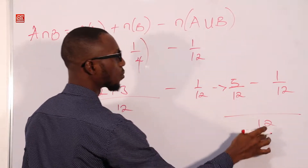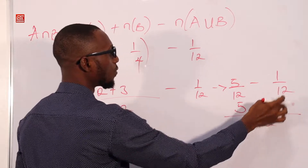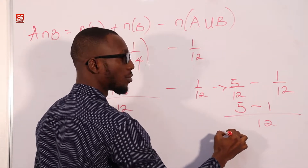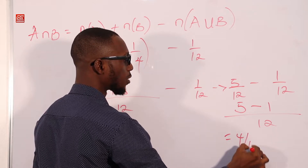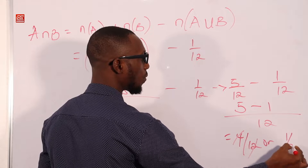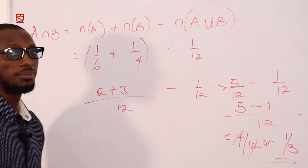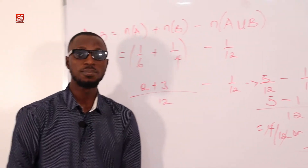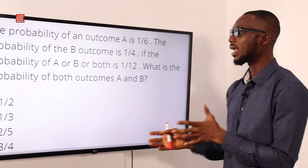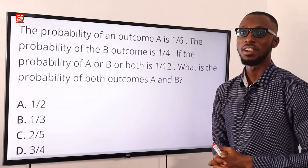LCM is 12. 12 in 12 is 1, times 5 gives 5. Minus: 12 in 12 is 1, times 1 gives 1. So this gives us 4 over 12. When we simplify, we have 1 over 3. The probability of both outcomes A and B is 1 over 3. Option B is correct.